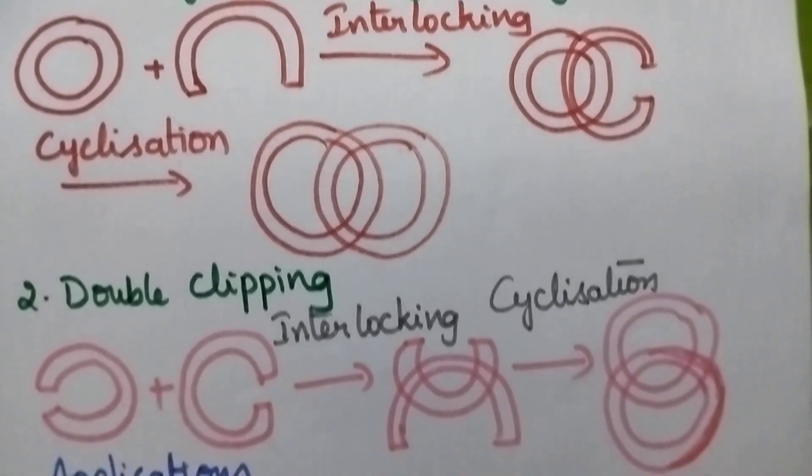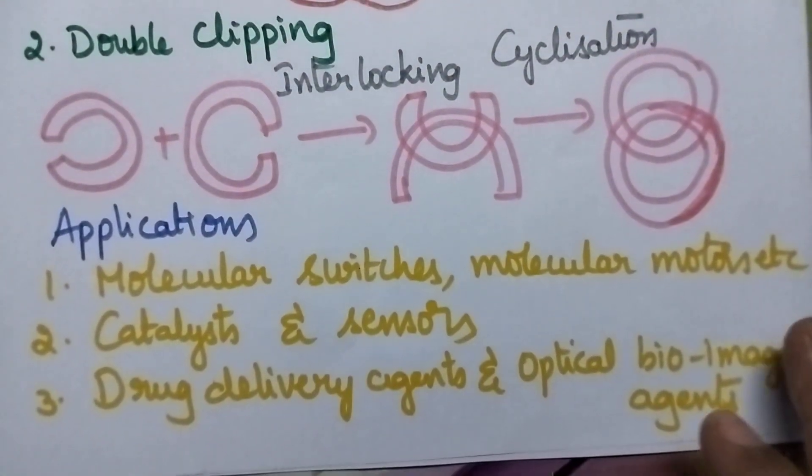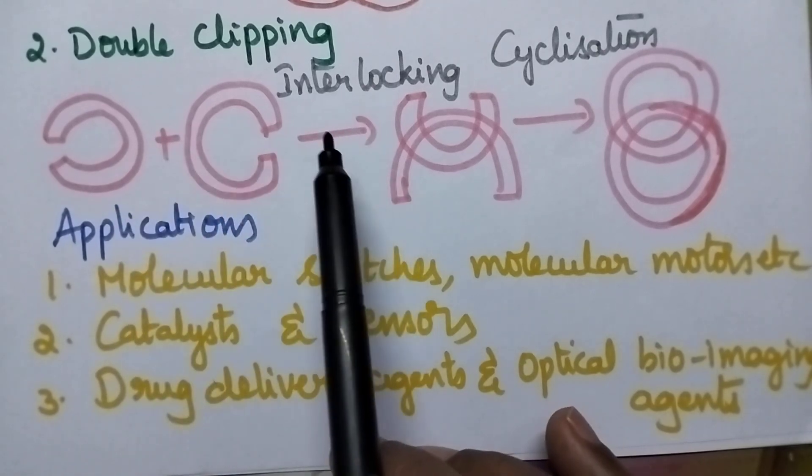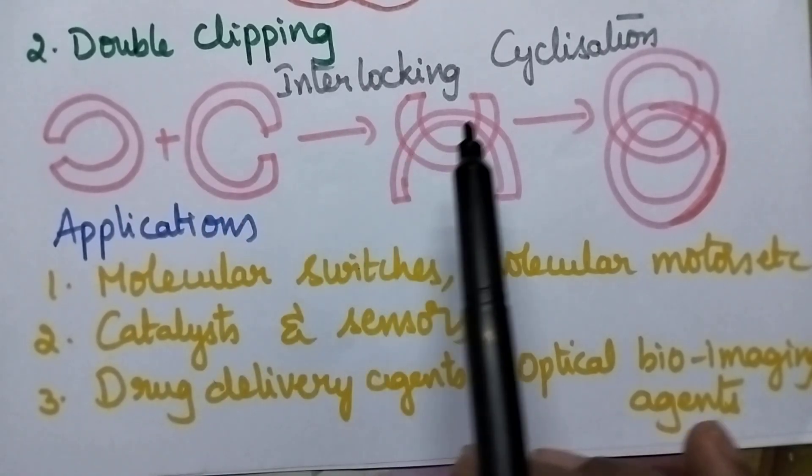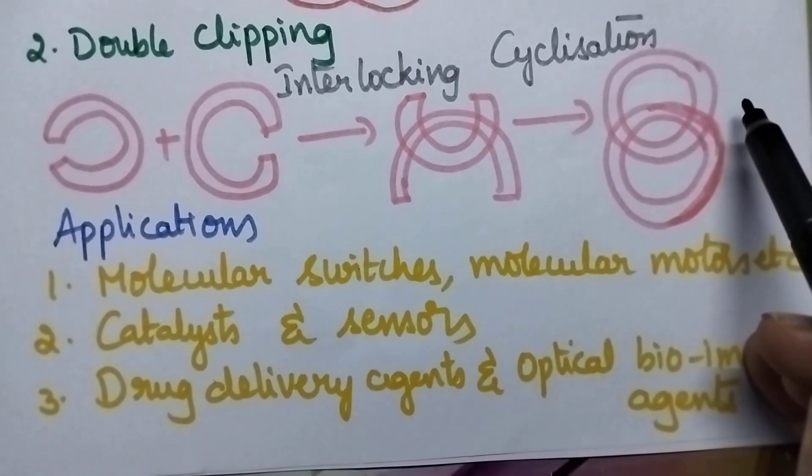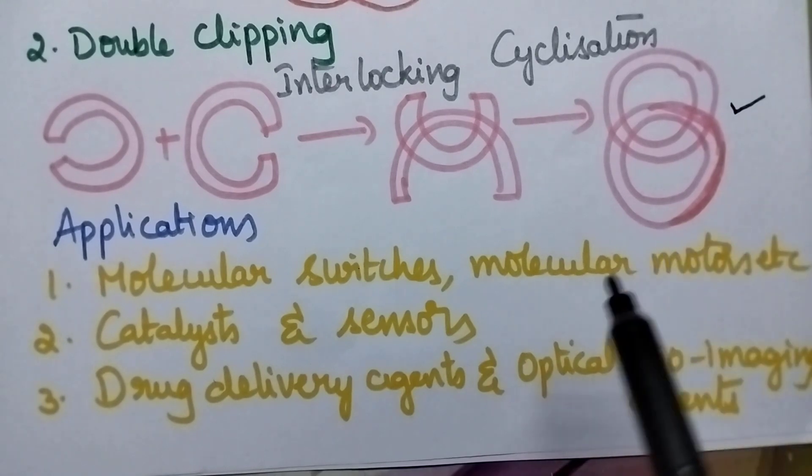Moving to the second method that is called as the double clipping process, here two macrocycles are partial. So initially one is interlocked with the other and in the second step the two macrocycles undergo cyclization and that results in the formation of the catenanes.